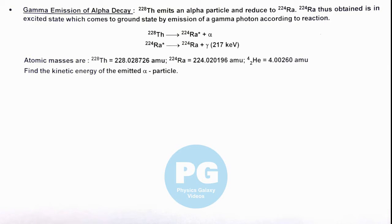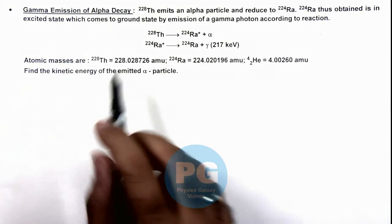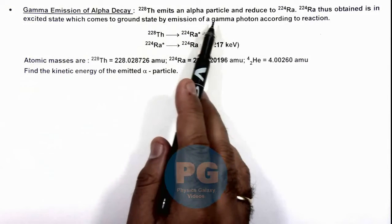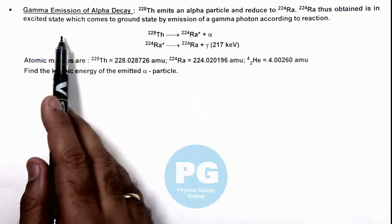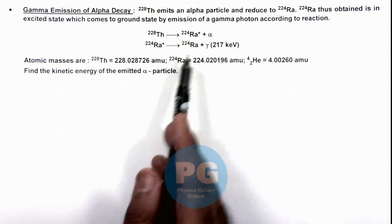In this illustration we'll discuss the gamma emission of alpha decay. Here we are given that a thorium nucleus emits an alpha particle and reduces to radium, and radium thus obtained is in excited state which comes to ground state by emission of a gamma photon according to this reaction.